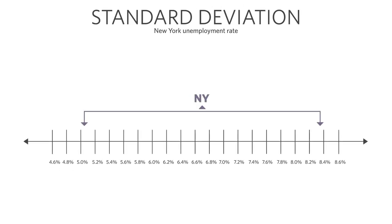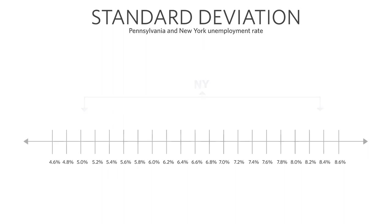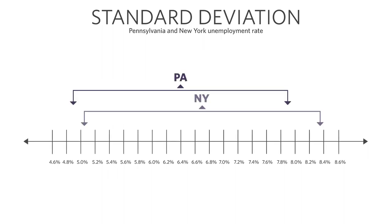New York's unemployment rate similarly — on average it was 6.7%, but depending on what month you're talking about, you could find it as low as 5% or as high as 8.3%, so it wanders around. If you overlap the two, notice something: the overlaps are almost the same. Pennsylvania's unemployment rate wanders around the same kind of area that New York's does. This overlap means we would say there's not a strong statistical difference between the unemployment rates in New York and Pennsylvania.